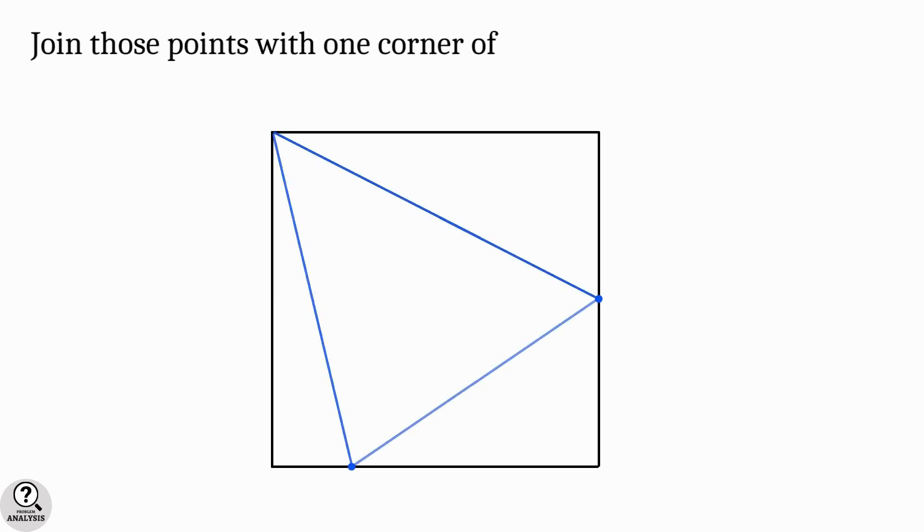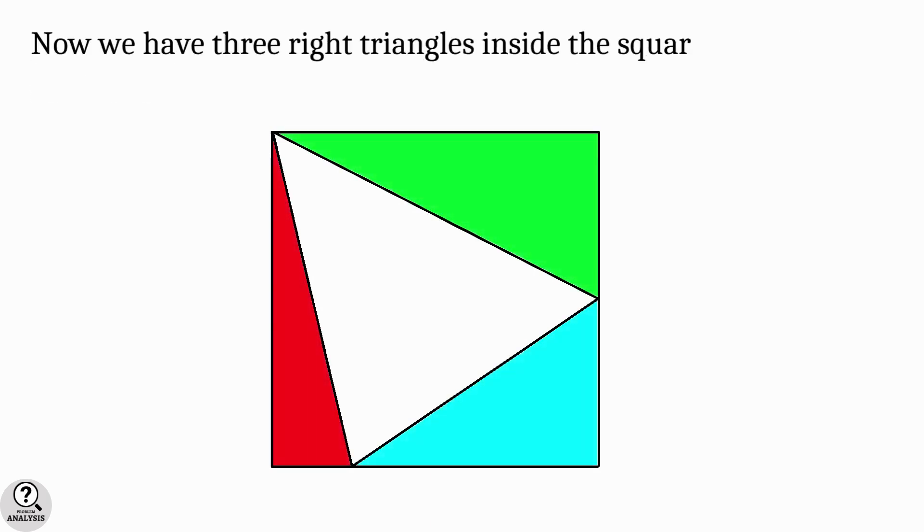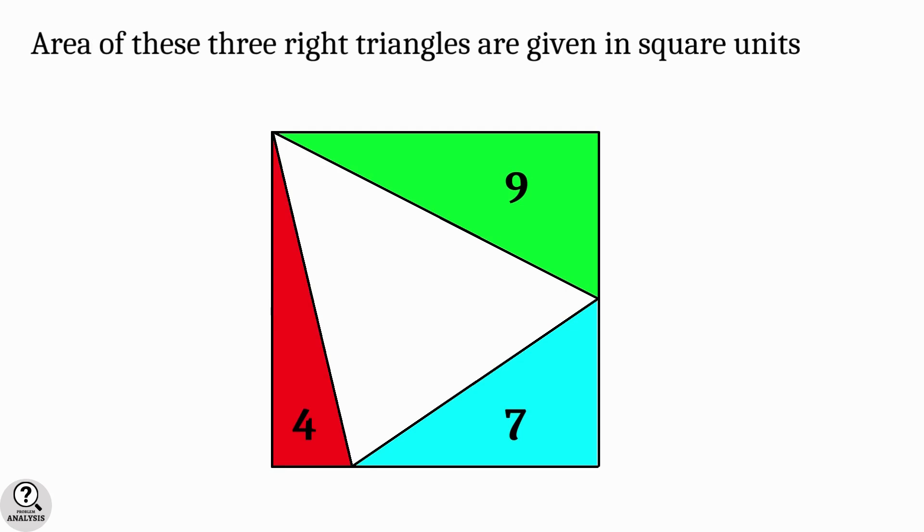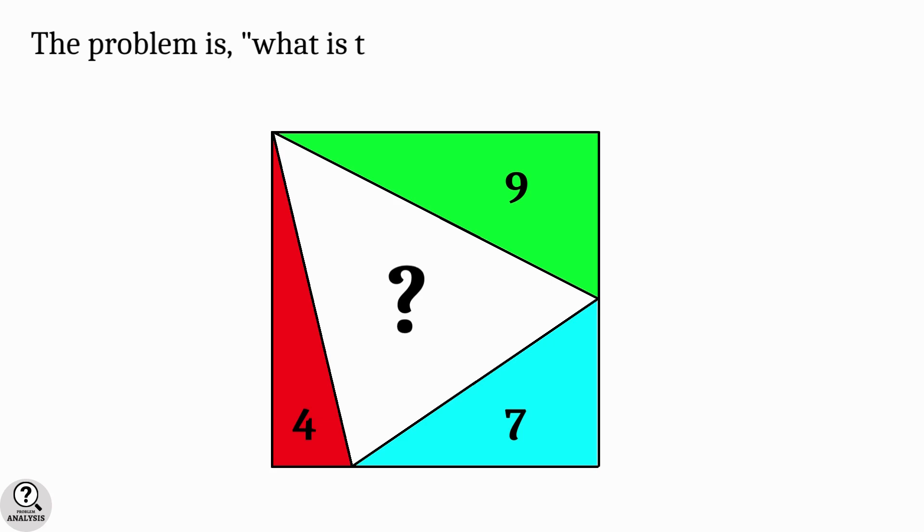We have a square. Now I am marking two points on the square. Using these two points and one corner of the square, a triangle is drawn inside the square. It is clear from the figure that there are three right triangles. Areas of these three right triangles are given as four, nine and seven square units as shown in the figure. Now my problem is what is the area of the inner white color triangle?